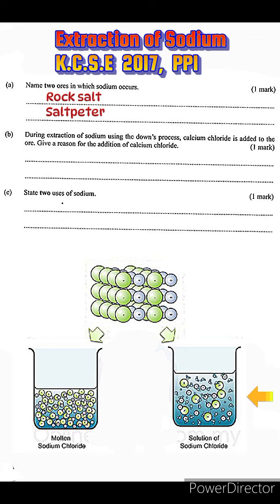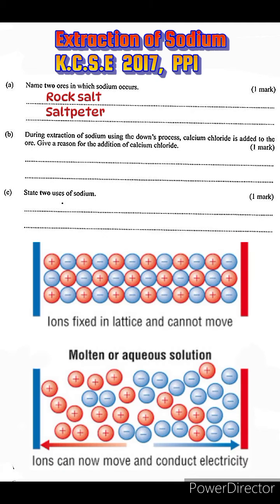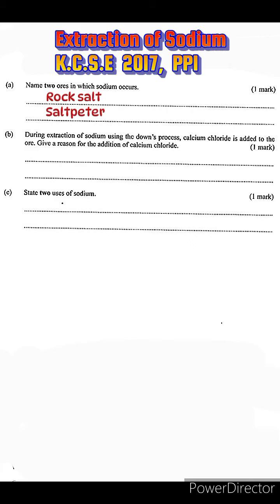For electrolysis to take place in ionic compounds, the ionic compounds need to be either in aqueous state or in molten state. This is because when they are in these two states the ions are mobile and can move around the structure transmitting the electric current. When in solid state, the ions are in fixed positions and therefore cannot conduct an electric current.